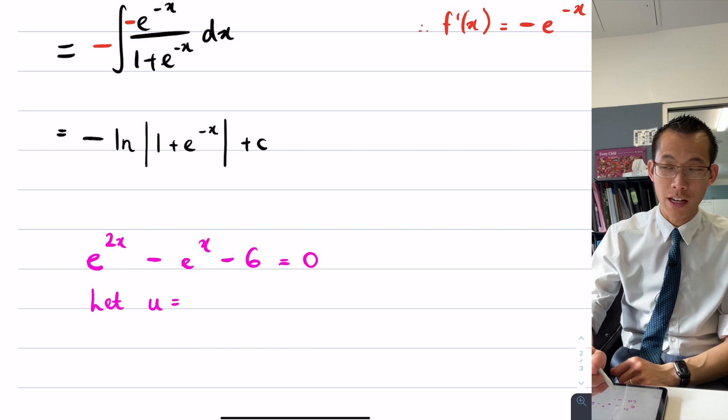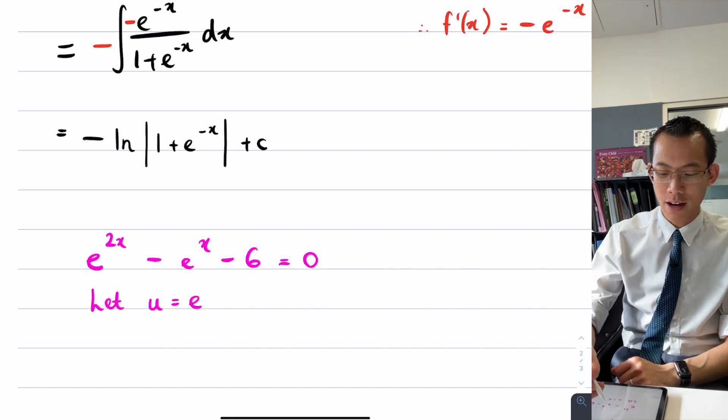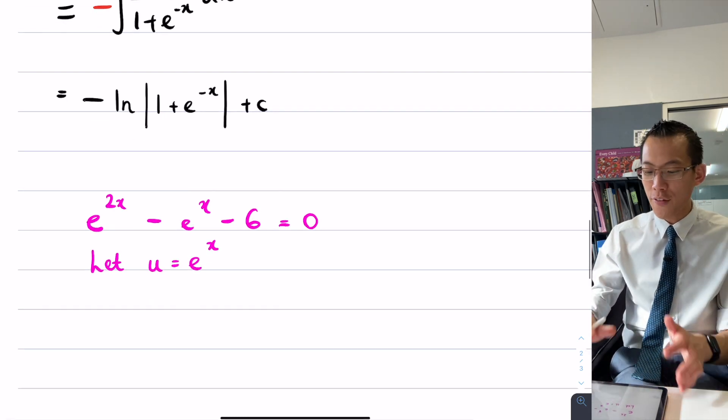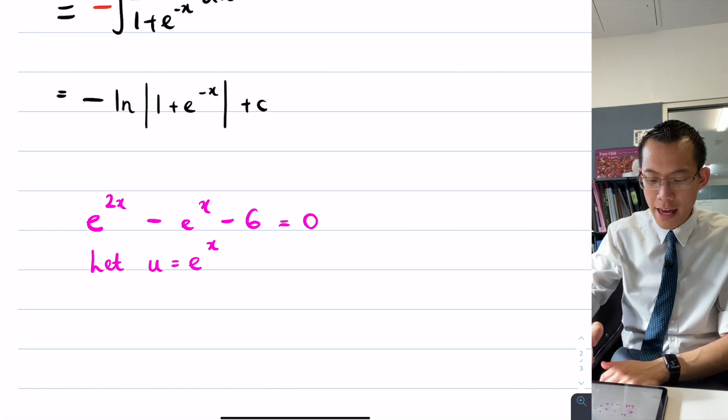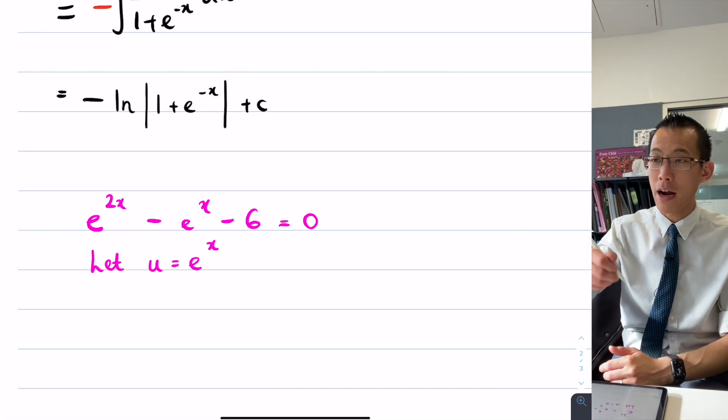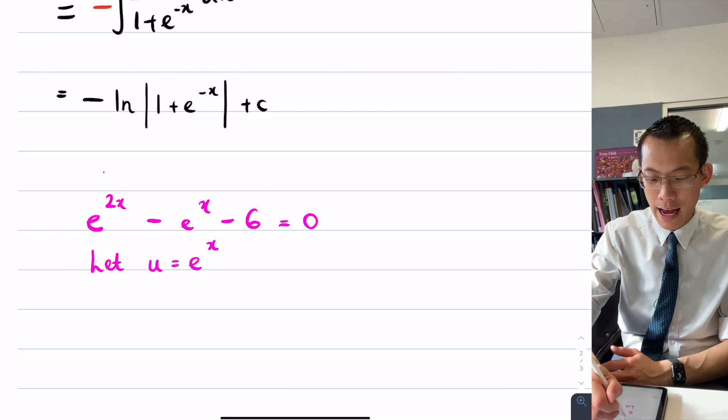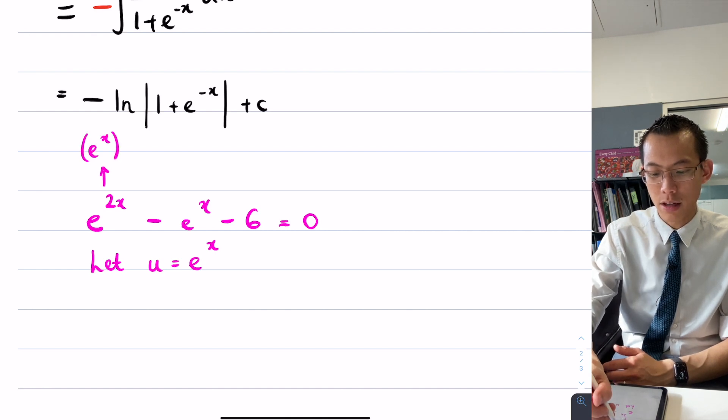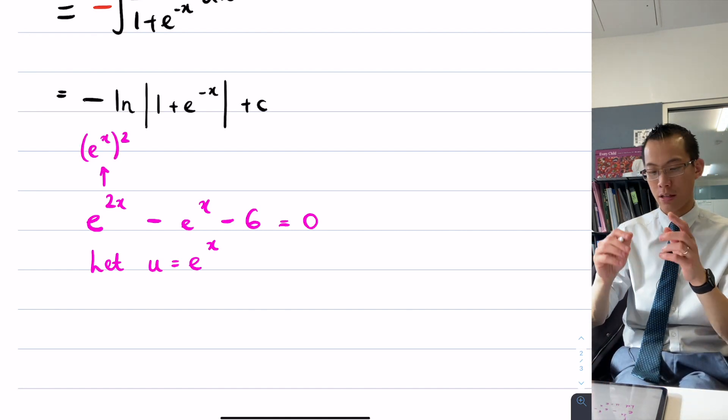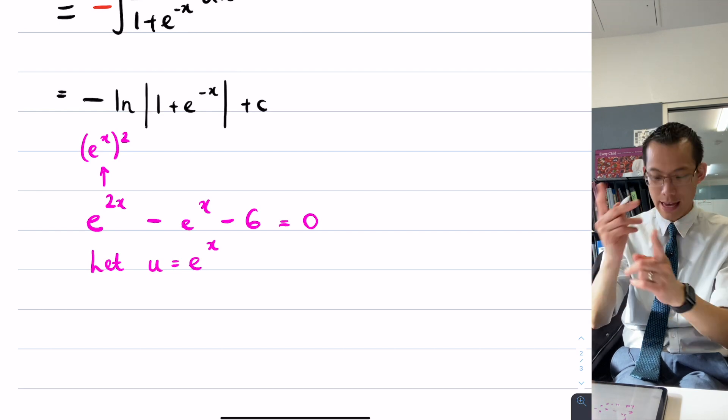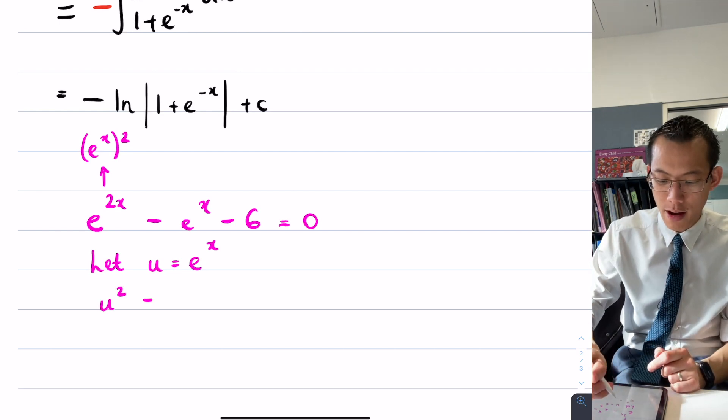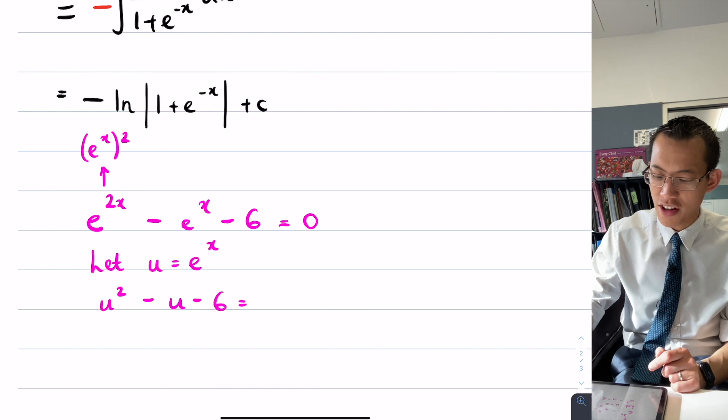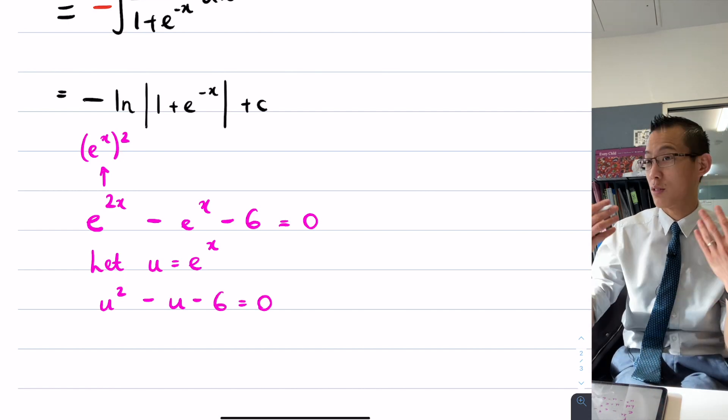So what I'm gonna do is I'm like, those exponentials, they look gross, so maybe this rings some bells. If I just swap it out, then what I can say is e to the power of 2x is actually the same as e to the x squared. Think about your index laws. The 2 and the x are just gonna multiply together. Exactly, so therefore it's just u squared minus u minus 6 and you're like, I don't know how to solve these. This is just a quadratic.